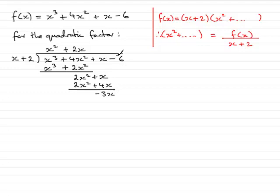Finally, bring down the -6. What do we multiply x by to get -3x? That's -3. We multiply -3 by (x + 2): -3 × x = -3x, and -3 × 2 = -6.